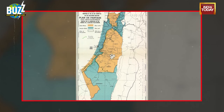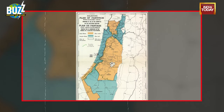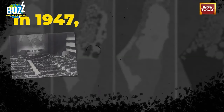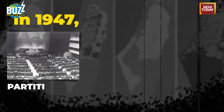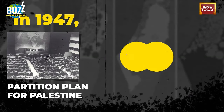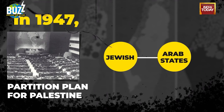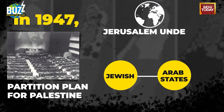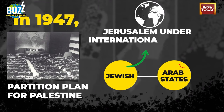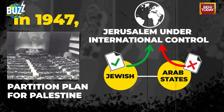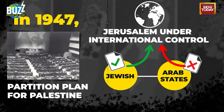Then came the United Nations partition plan. In 1947, the United Nations proposed a partition plan for Palestine, which would have divided the land into separate Jewish and Arab states, with Jerusalem under international control. The Jewish community accepted the plan, but the Arab states and the Palestinian Arab leadership rejected it.